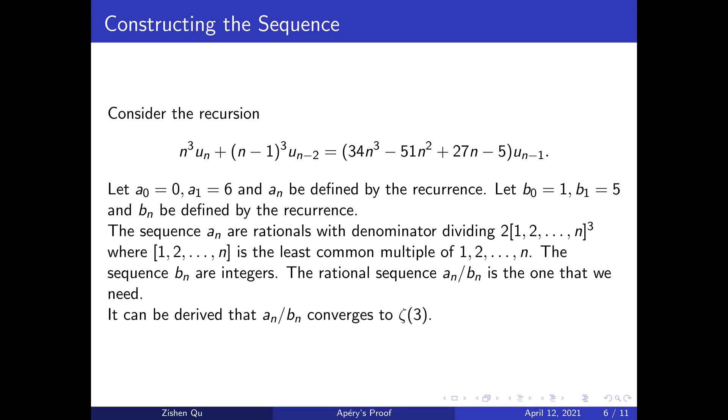Construct a_n with this recurrence by taking a_0 to be 0 and a_1 to be 6 and defining the rest of a_n using the recurrence. Construct b_n by taking b_0 to be 1 and b_1 to be 5 and defining the rest of b_n using the recurrence.